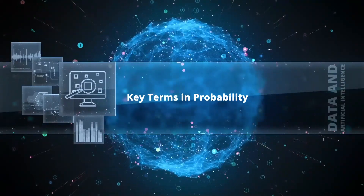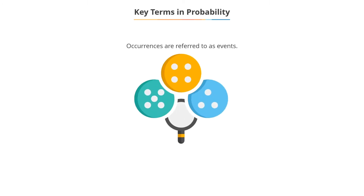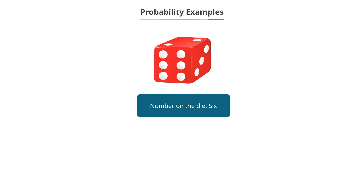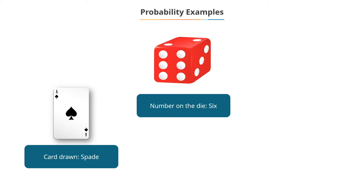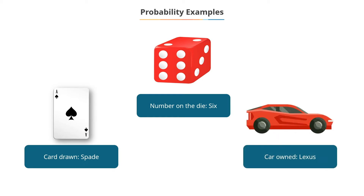In this video, we will understand the key terms in probability. Occurrences are referred to as events and probabilities are assigned to them. A few examples include: the number on the die is six or an even number when thrown; a card drawn at random from a deck of 52 cards is a spade; a resident in the neighborhood owning a Lexus.